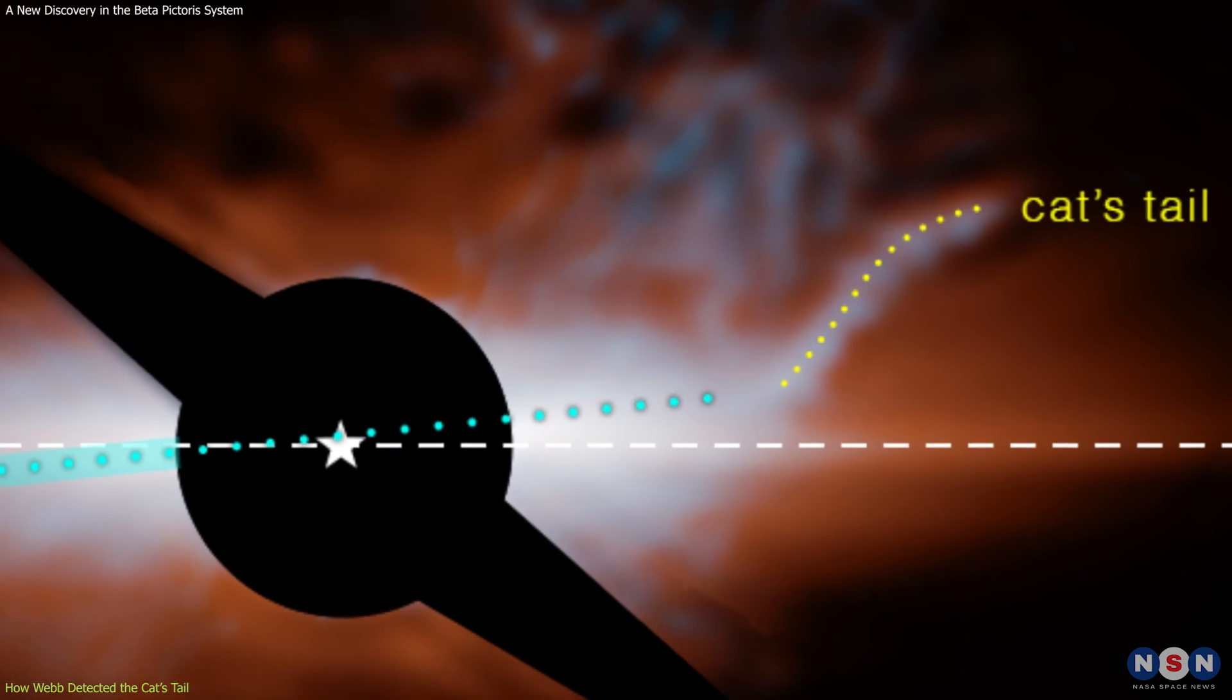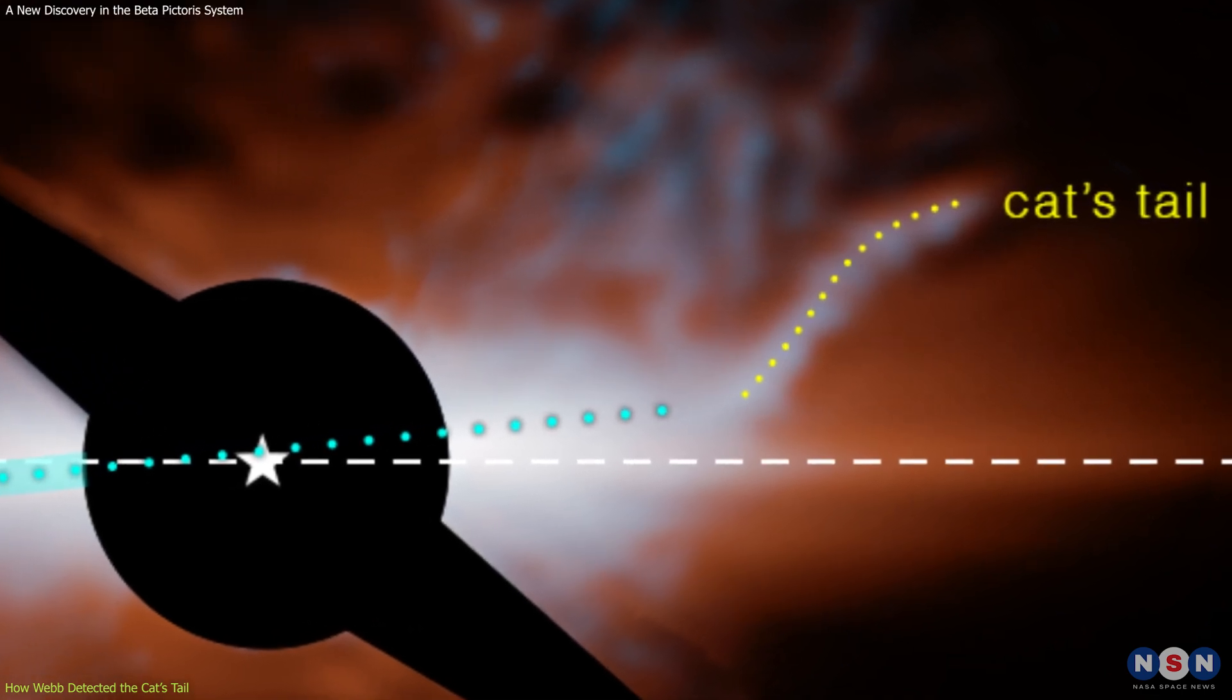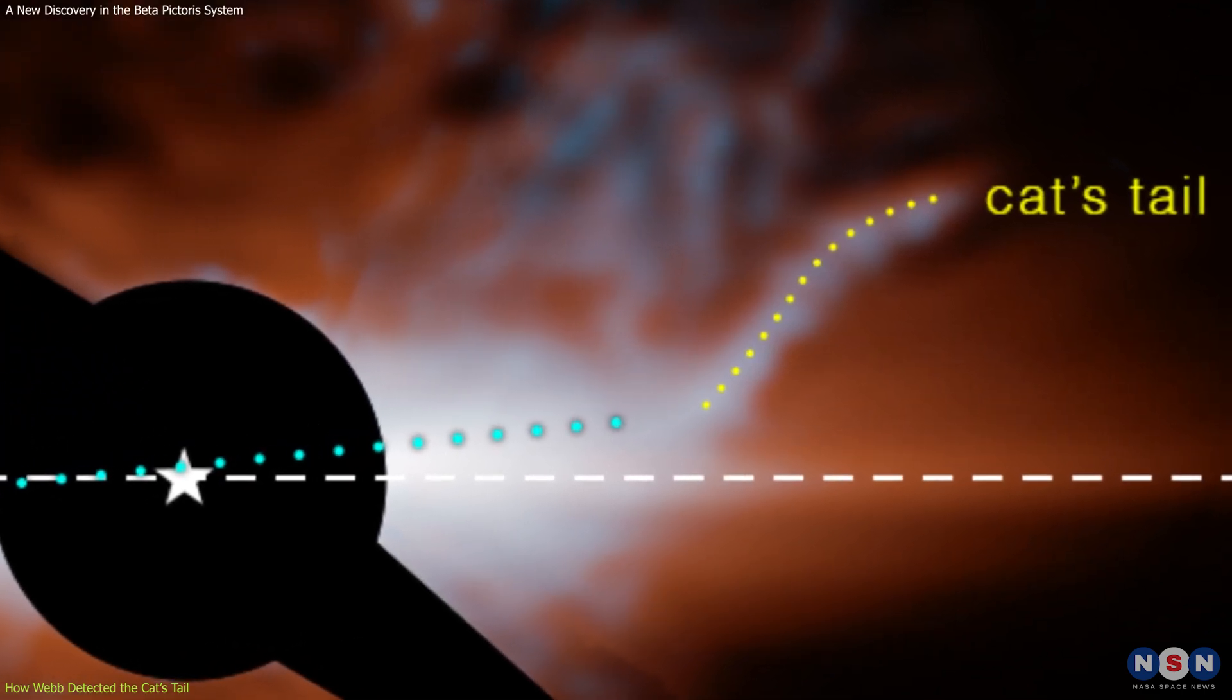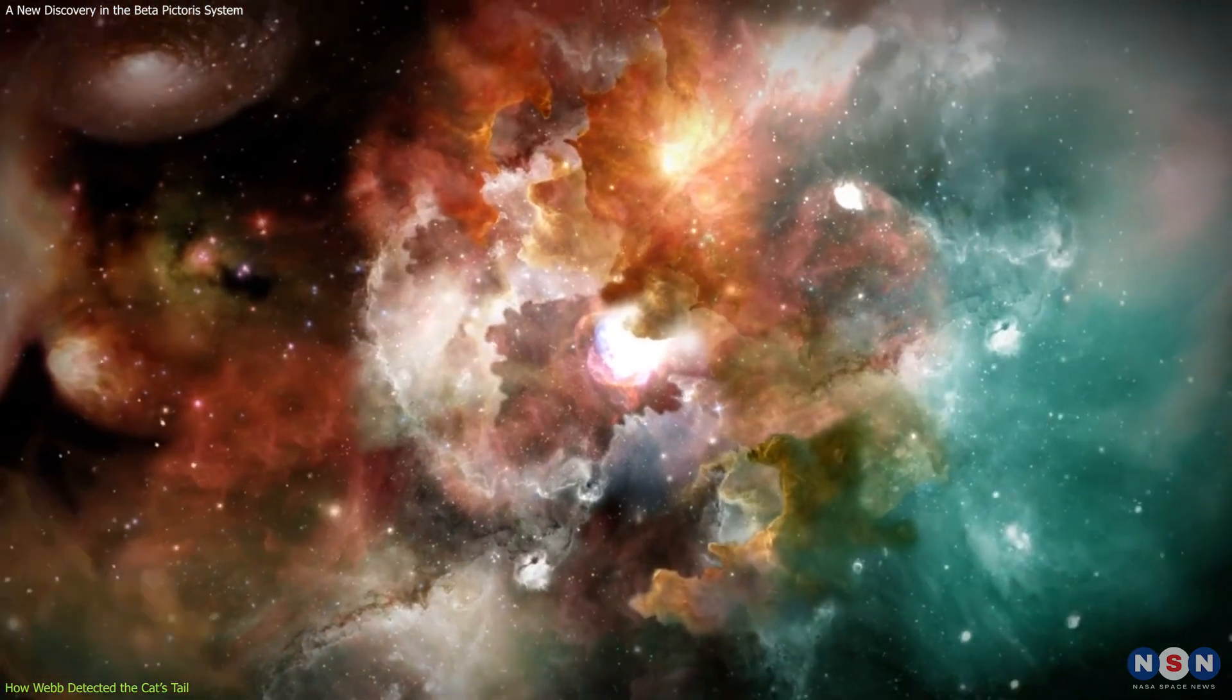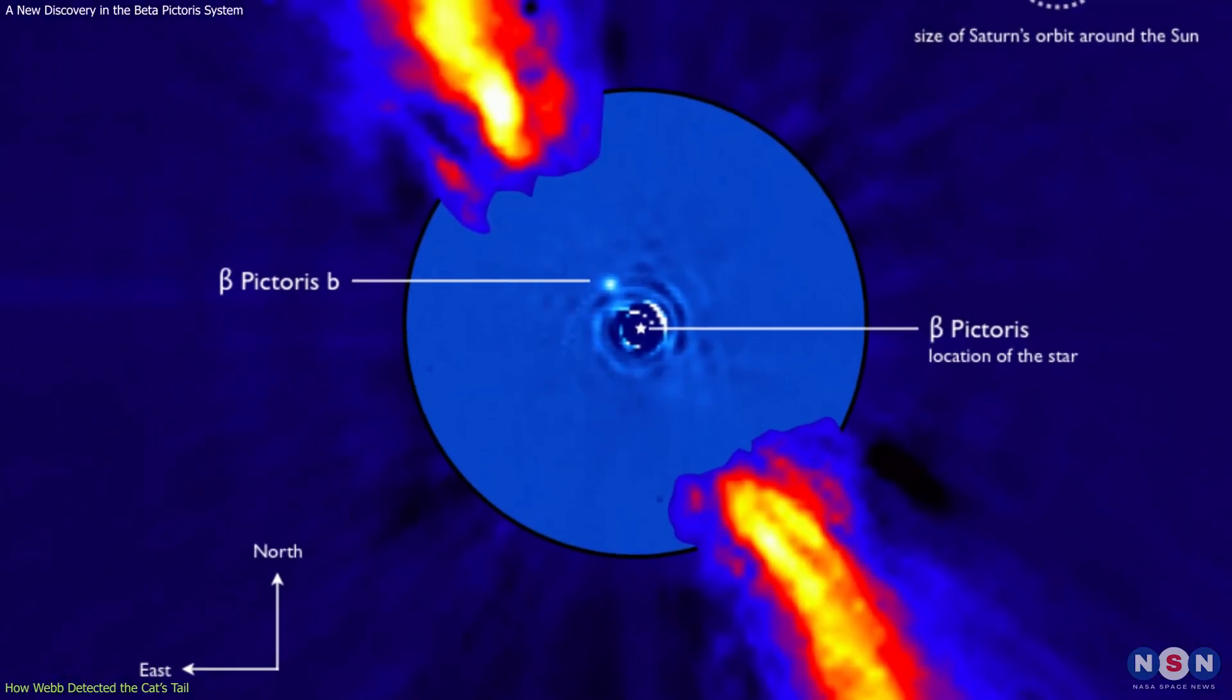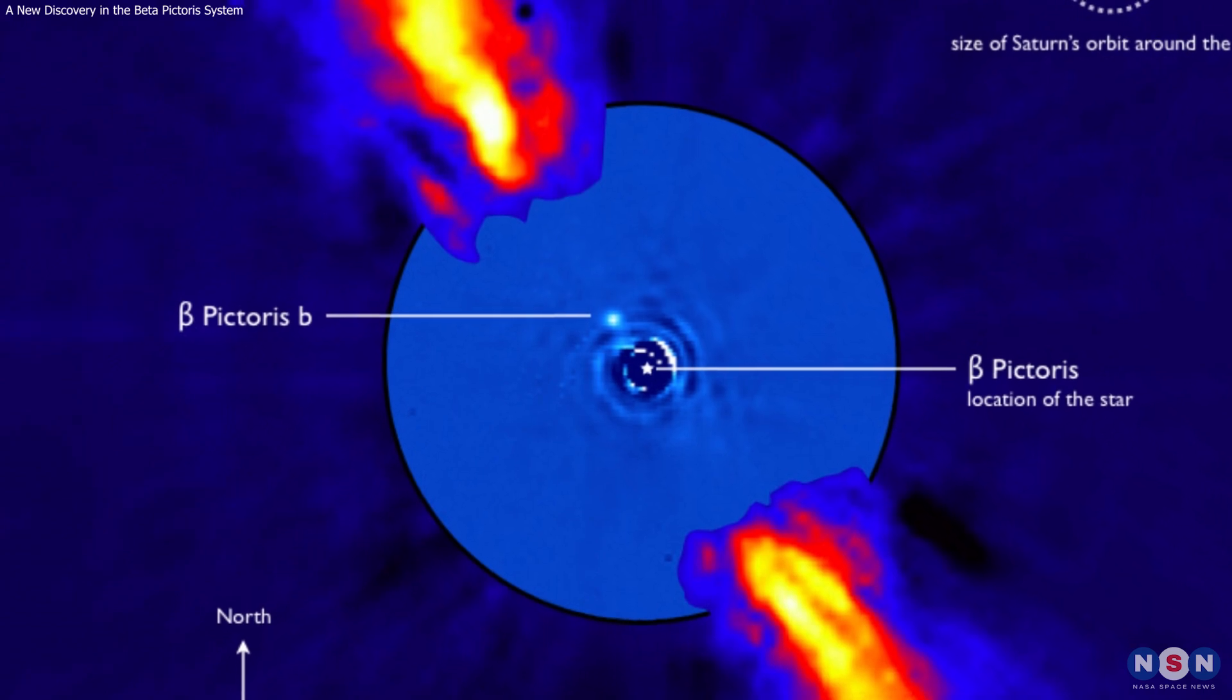As you can see, the cat's tail is a very distinctive feature, and it stands out from the rest of the system. But how did it form, and what does it tell us about the Beta Pictoris system? Let's find out in the next section.